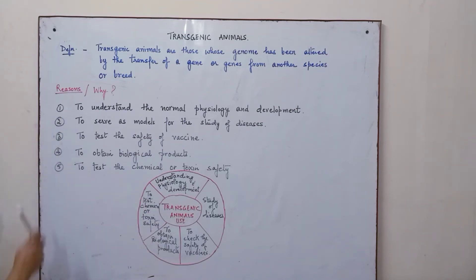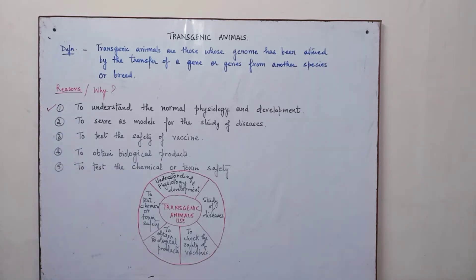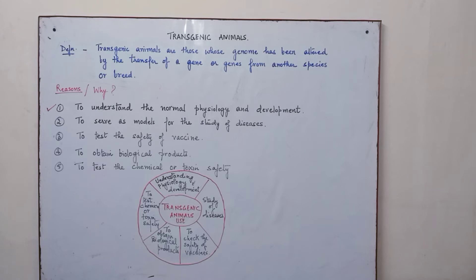I have made a pictorial representation to help you understand easily. The first reason why transgenic animals are produced is to understand normal physiology and development. Transgenic animals help us understand the mechanism of how a gene functions, how gene function is regulated, and how genes are expressing themselves, as well as normal body development.